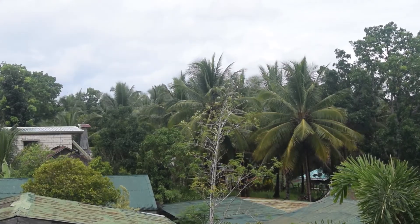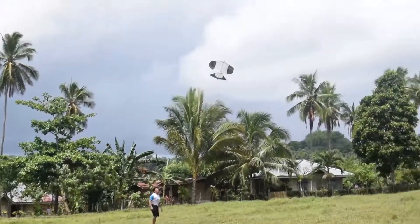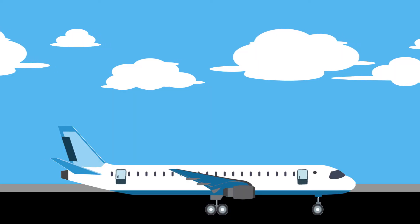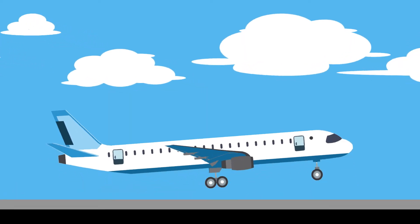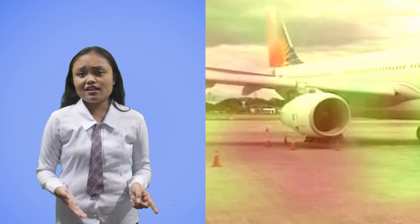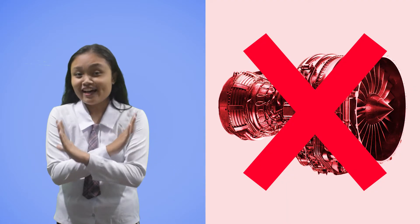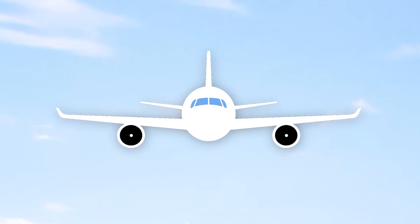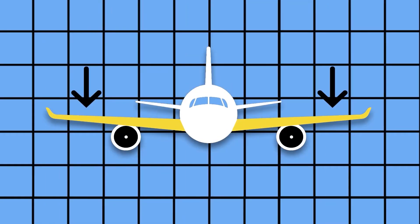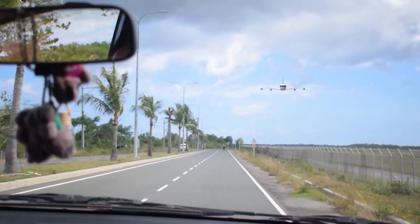Aerodynamics is the way air moves around things. The rules of aerodynamics explain how an airplane is able to fly. Now you probably believe that an airplane flies because of its engine — not only that, because the wings of an airplane play a great role in making it fly.